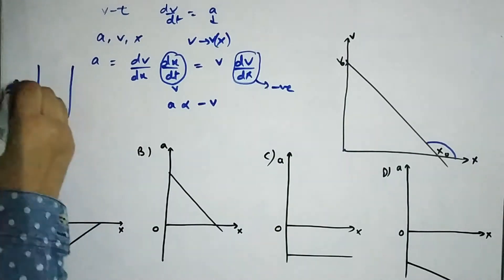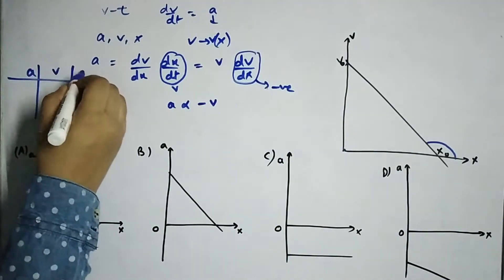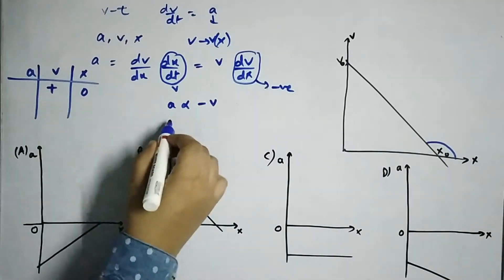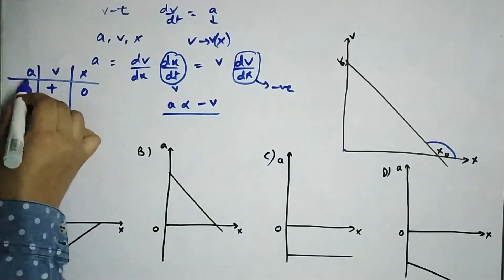Or we can say, let's make a table out of it, a, v and x. If x is zero, v is positive. So I can say from this formula that a will be negative.